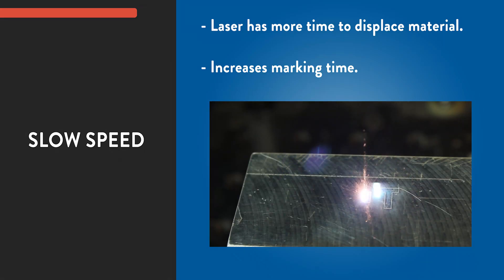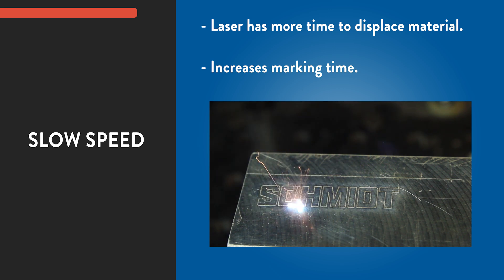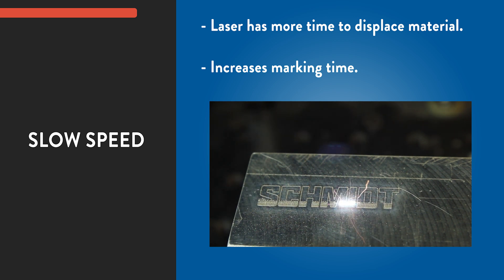If you can't get the depth you want by increasing your power, you can use a slow laser speed setting. By slowing the speed of your laser, you increase the amount of time the laser spends over each section of the part you're marking. This gives your laser more time to displace material, resulting in a deeper mark.